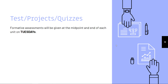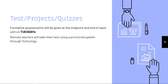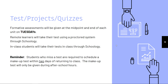Tests are always on Tuesdays as designated by the district, and there may be a mini quiz on Tuesdays when no test is scheduled. Remote learners will take their tests using a proctored system through Schoology; in-class students take their tests in class through Schoology. Students who miss a test must schedule a makeup within two days of returning to class, and makeup tests are given during after-school hours by appointment — especially until Miss Pierce gets back.